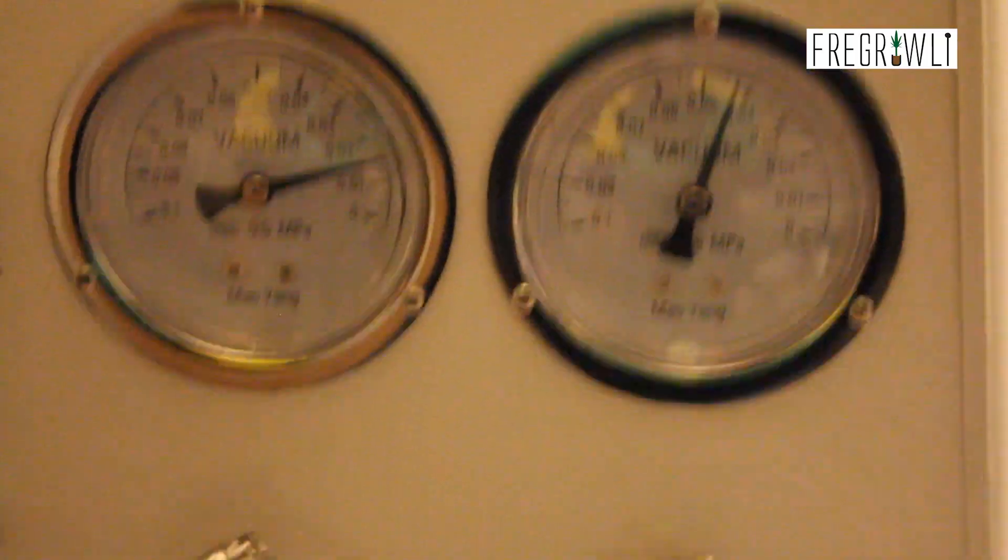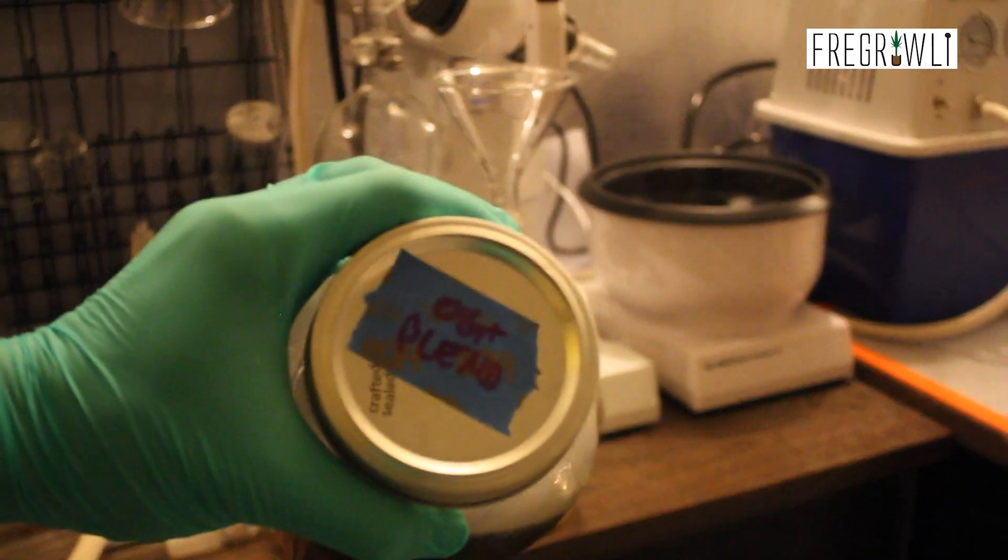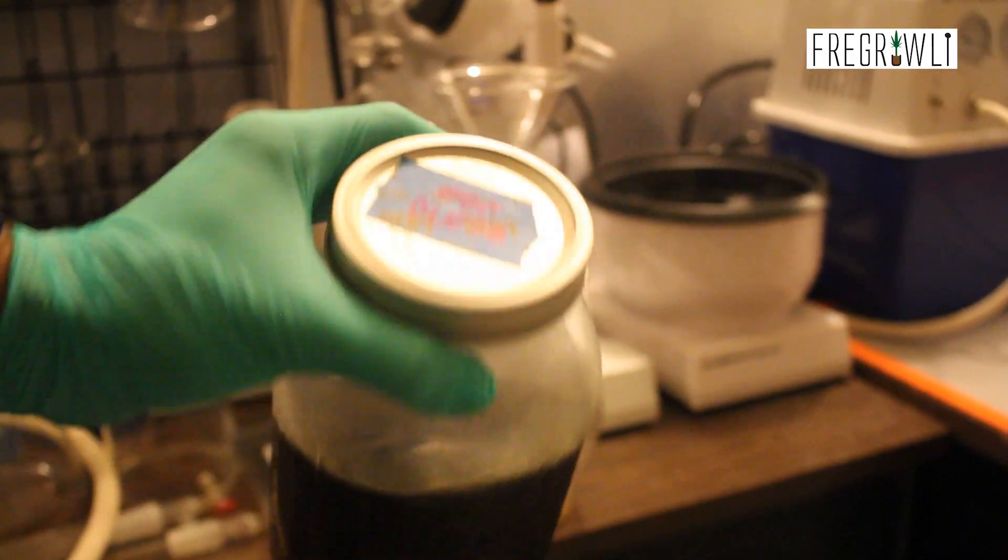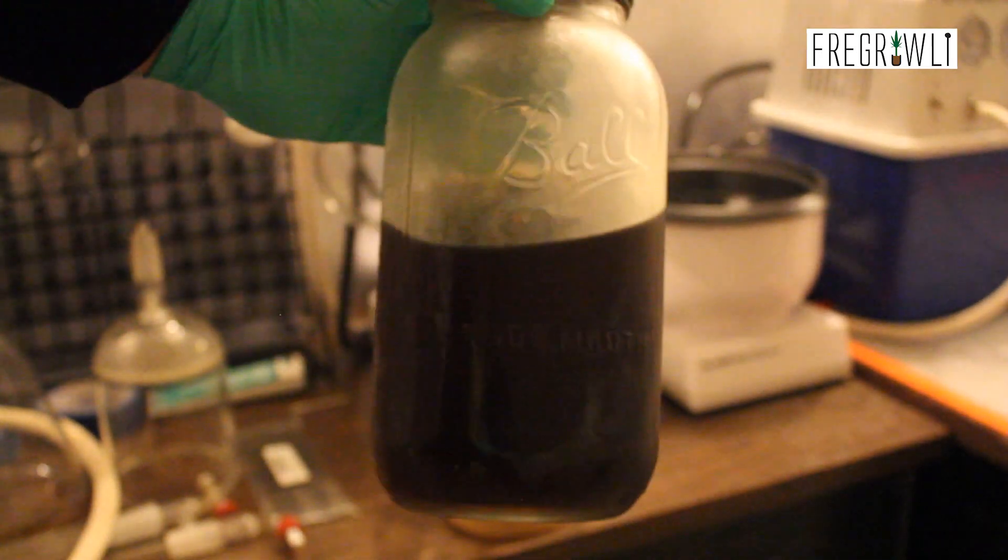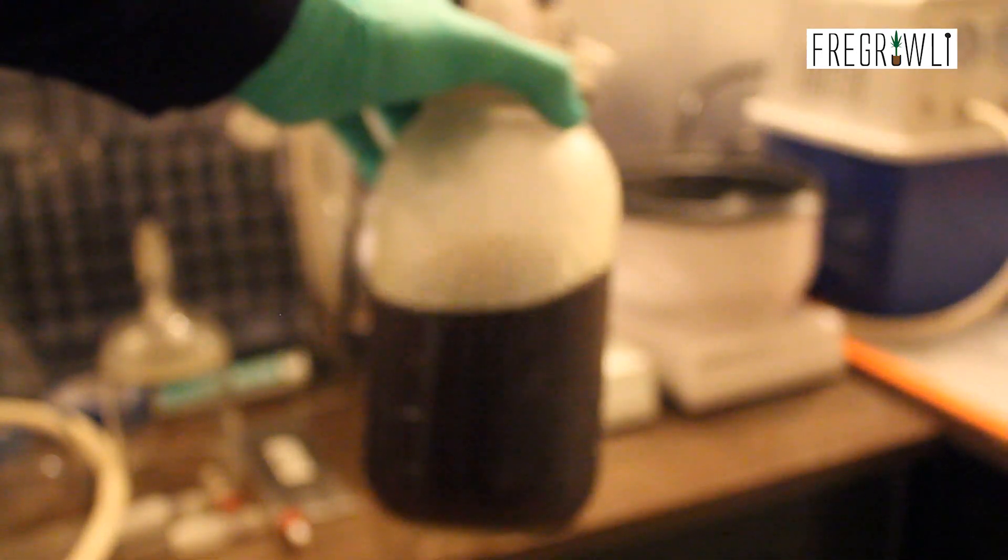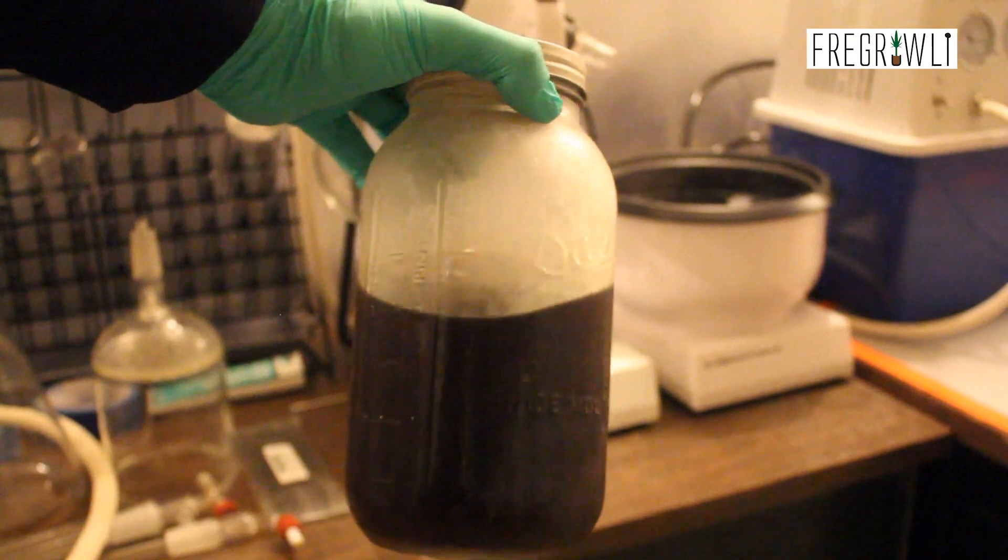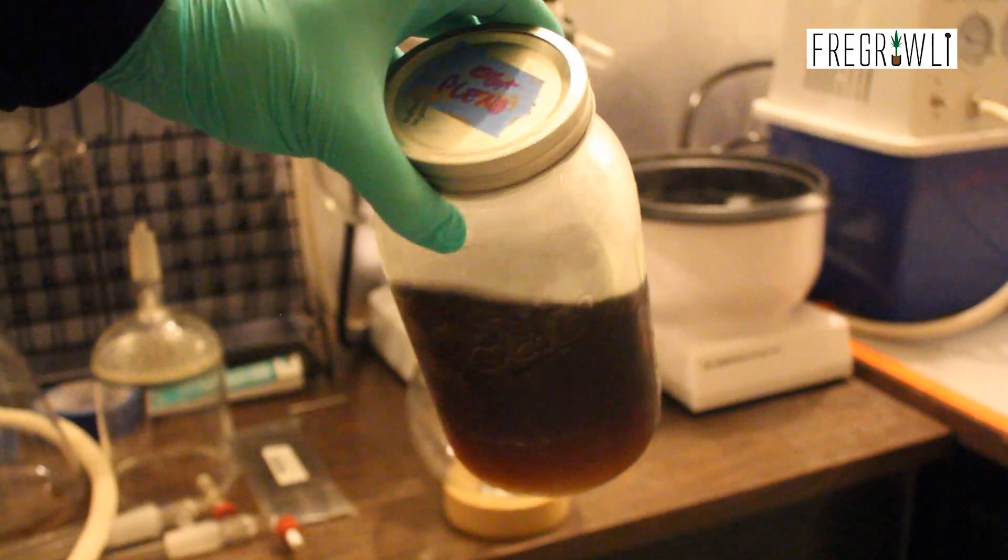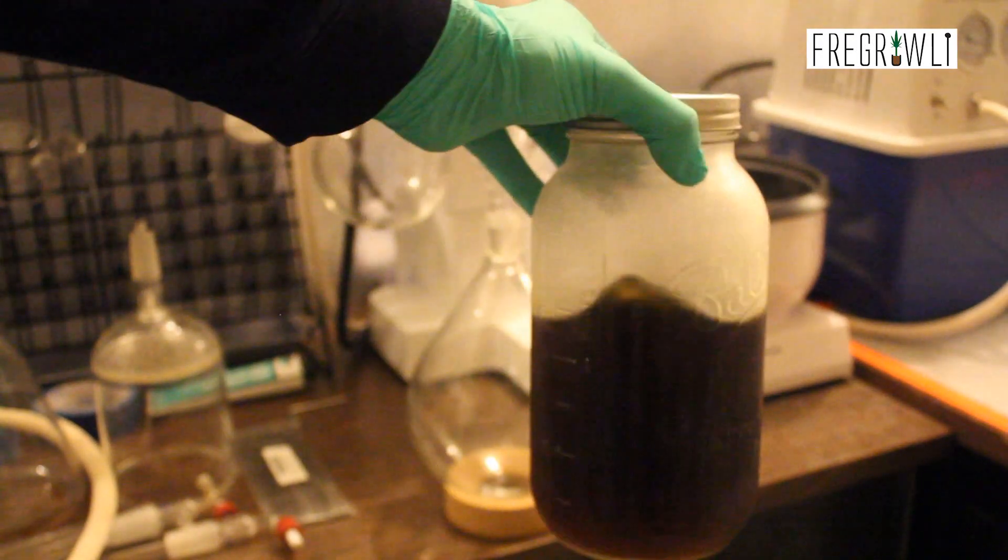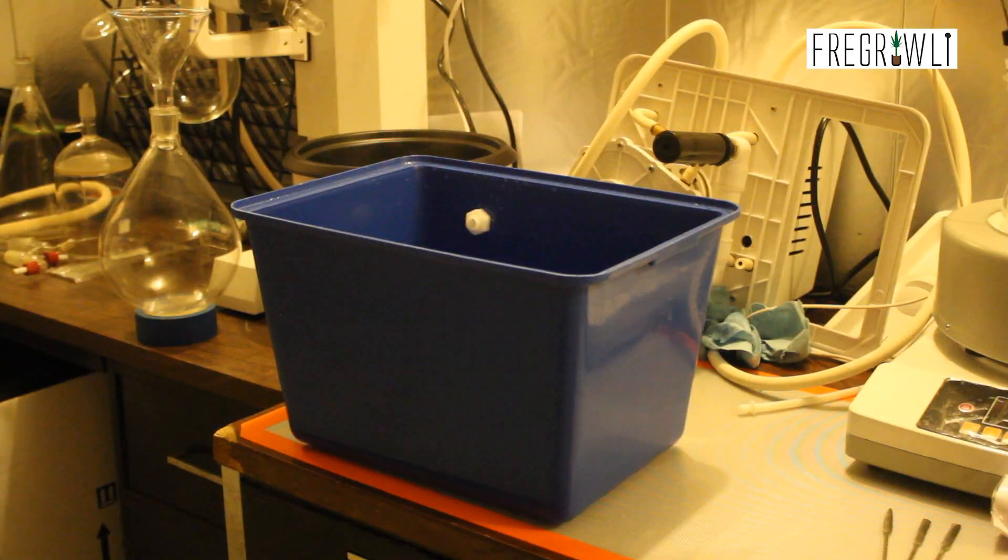Now that you know what the parts of the rotovap are and what other items you might need, let's take a look at my process. First and foremost, always make sure you clean your unit in between runs, just as you should with any extraction equipment. If you do not sterilize your equipment, you could potentially pull over contaminants from previous runs, including unseen chemicals like pesticides or molds.